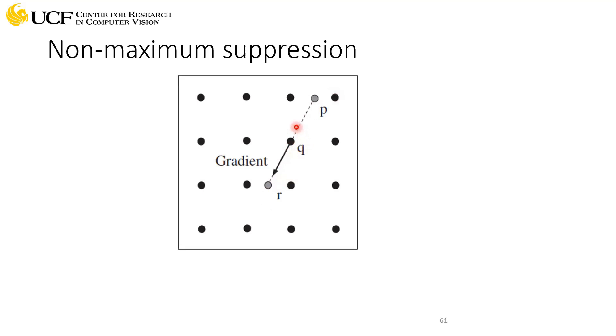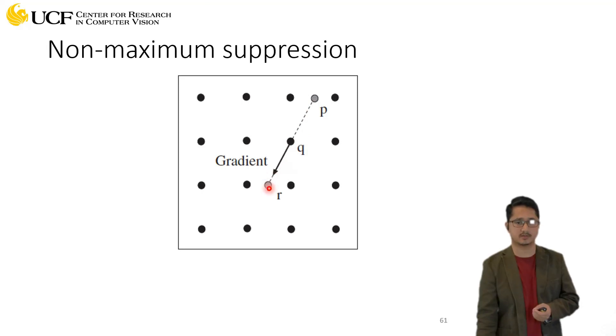Now sometimes it may happen because this is not a continuous space, it's a discrete space. In this orientation you might not have any pixels. In that case, what you will do is try to interpolate this value using the neighboring pixels of that location.